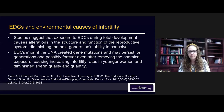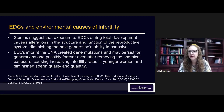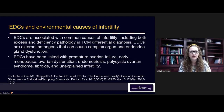Endocrine disrupting chemicals imprint the DNA and create gene mutations that may persist for generations — possibly forever — even after removing chemical exposure, causing increasing infertility rates in younger women and diminished sperm quality and quantity. A lot of times people with PCOS find that each generation it's getting harder and harder to conceive and have a healthy pregnancy. Endocrine disrupting chemicals are associated with common causes of infertility including both excess and deficiency pathology in TCM differential diagnosis.